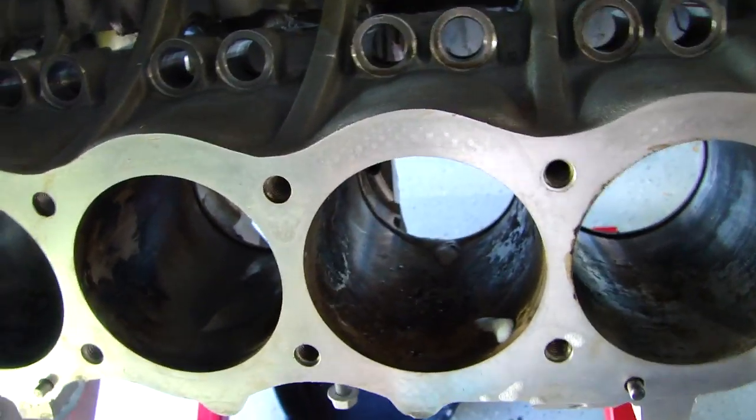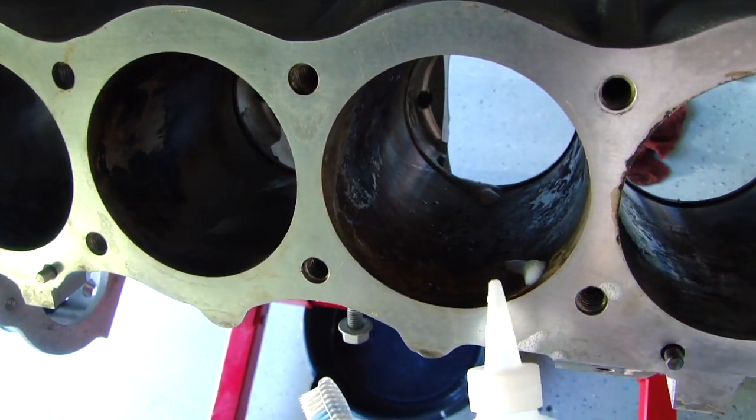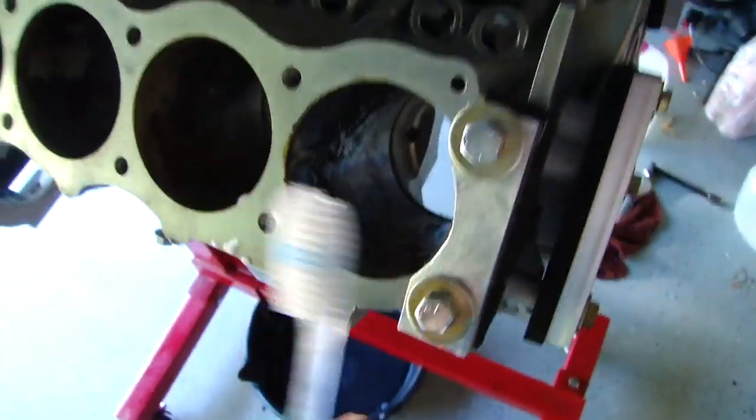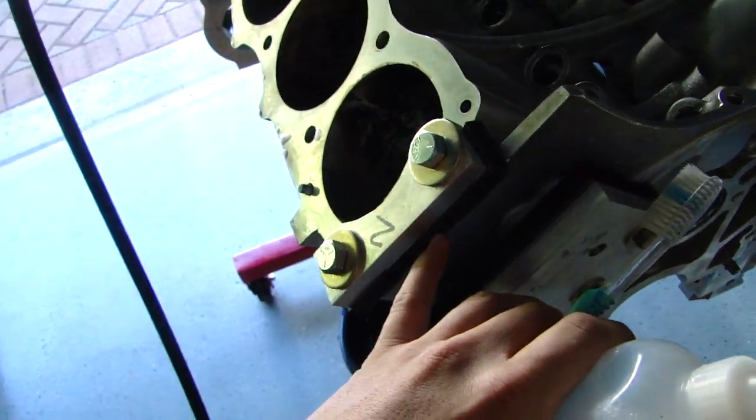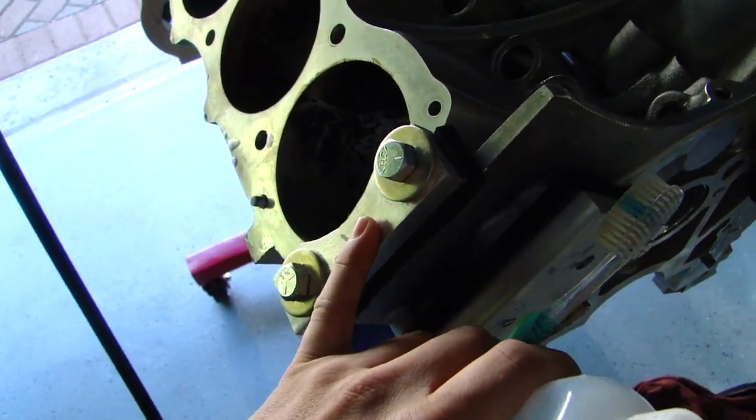Then even if your block pressure test is cold like mine does at 60 psi, with these block off plates I made out of three-eighths hard rubber and some aluminum half-inch plate.